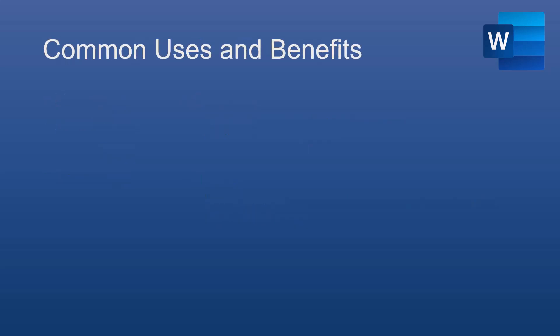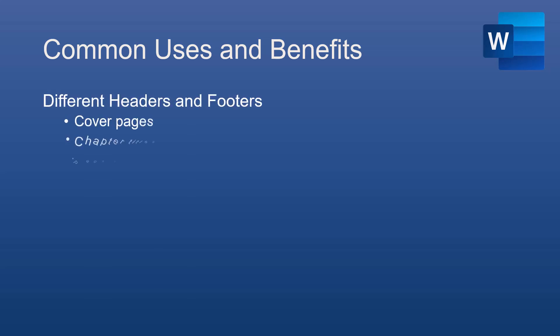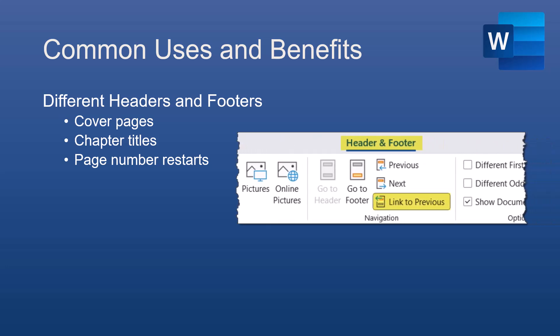One of the most common uses of Section Breaks is for different headers and footers. You might want the header or footer to change from one section to another — for example, having a different chapter title for each chapter. Section Breaks let you unlink headers and footers between sections; you just have to remember to disable the Link to Previous option if you want them to be different.